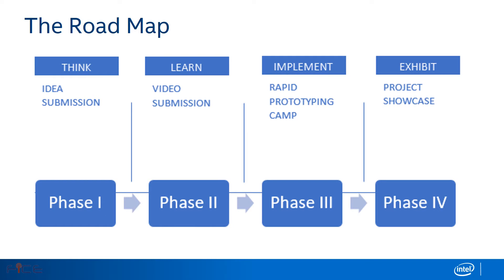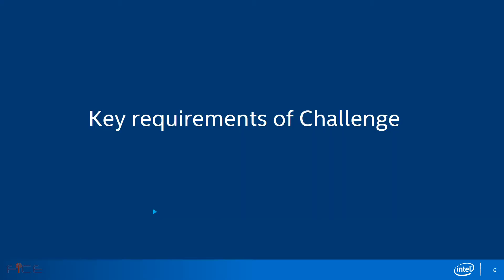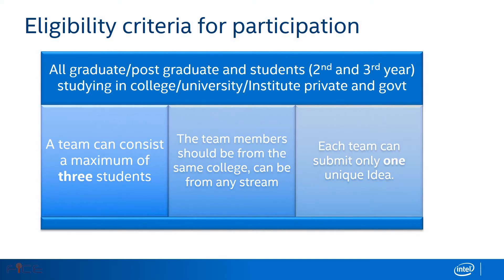Phase four is the final showcase of the prototype. Teams qualifying phase three will showcase their final prototype, where projects will be evaluated. Shortlisted teams will get the opportunity to be part of a workshop at one of the leading accelerators. We will now look at the key requirements of the Intel Higher Education Challenge 2017.